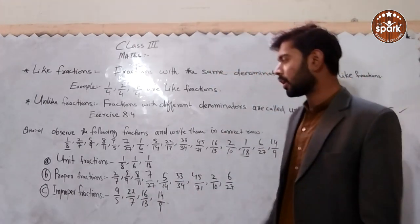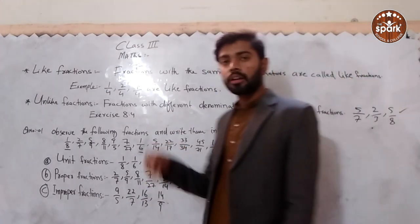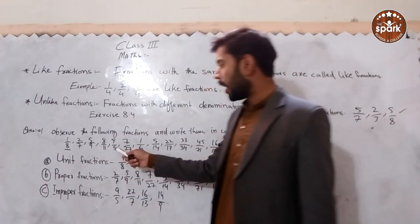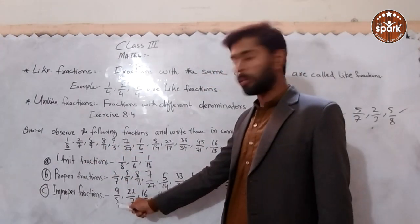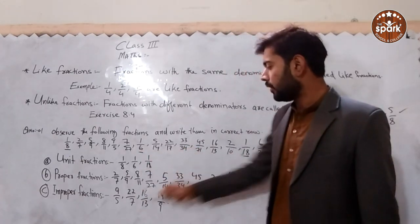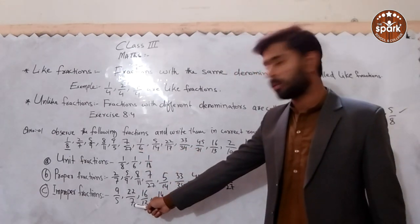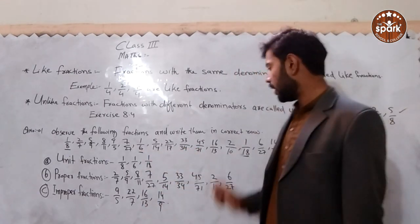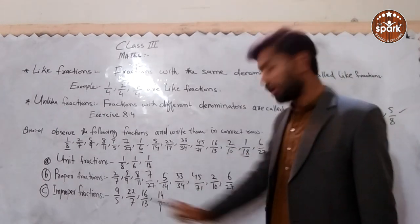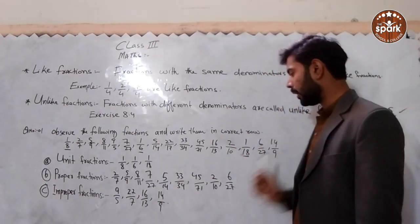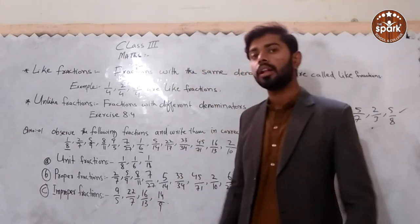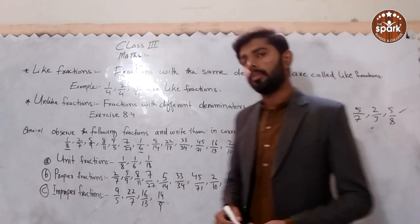For improper fractions, the numerator is greater than the denominator. For example, 9 upon 5 — the numerator 9 is greater than 5. Also, 24 upon 7, 16 upon 13, and 14 upon 9 — in all these, the numerator is greater. So these four fractions are improper fractions.